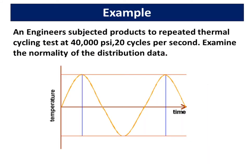Let's take a look at an example. An engineer subjected products to repeated thermal cycling test at 40,000 psi, 20 cycles per second. Examine the normality of the distribution data.